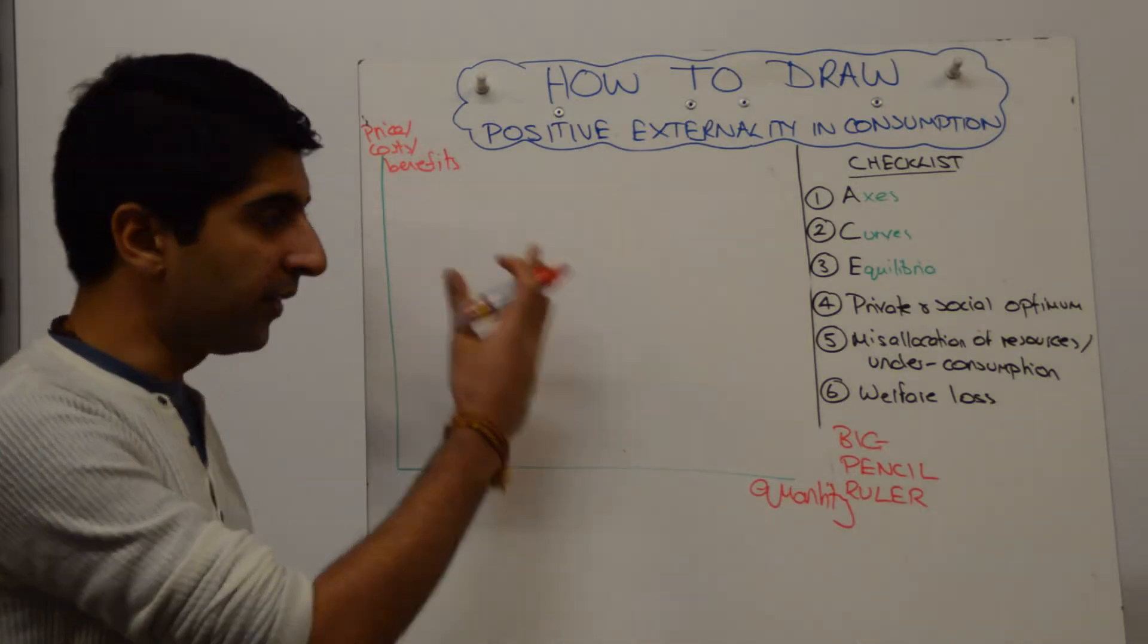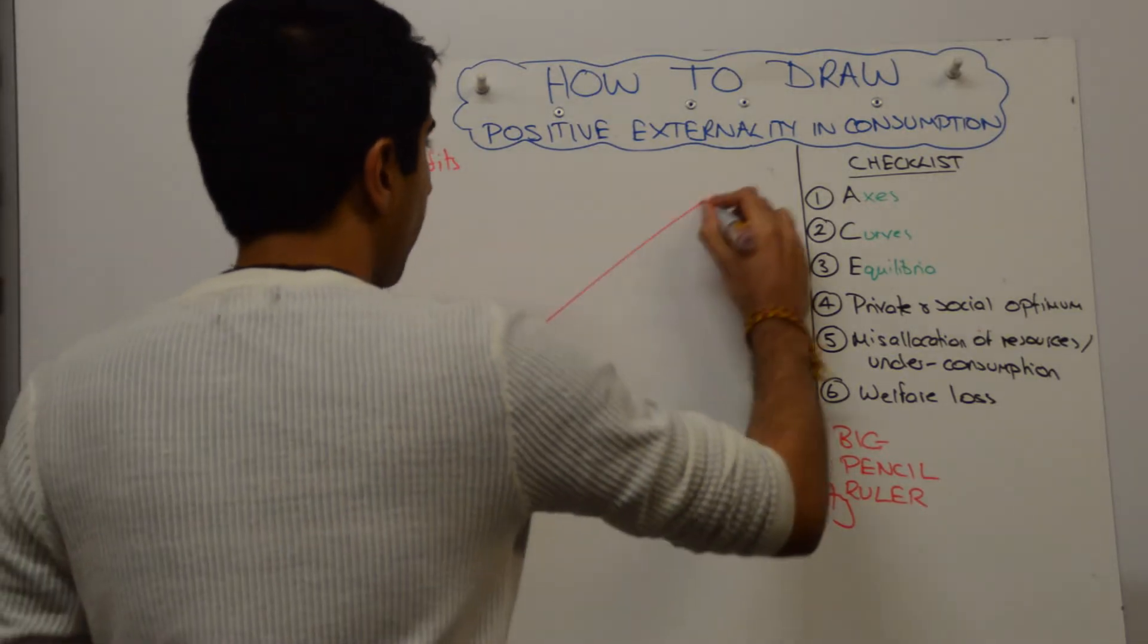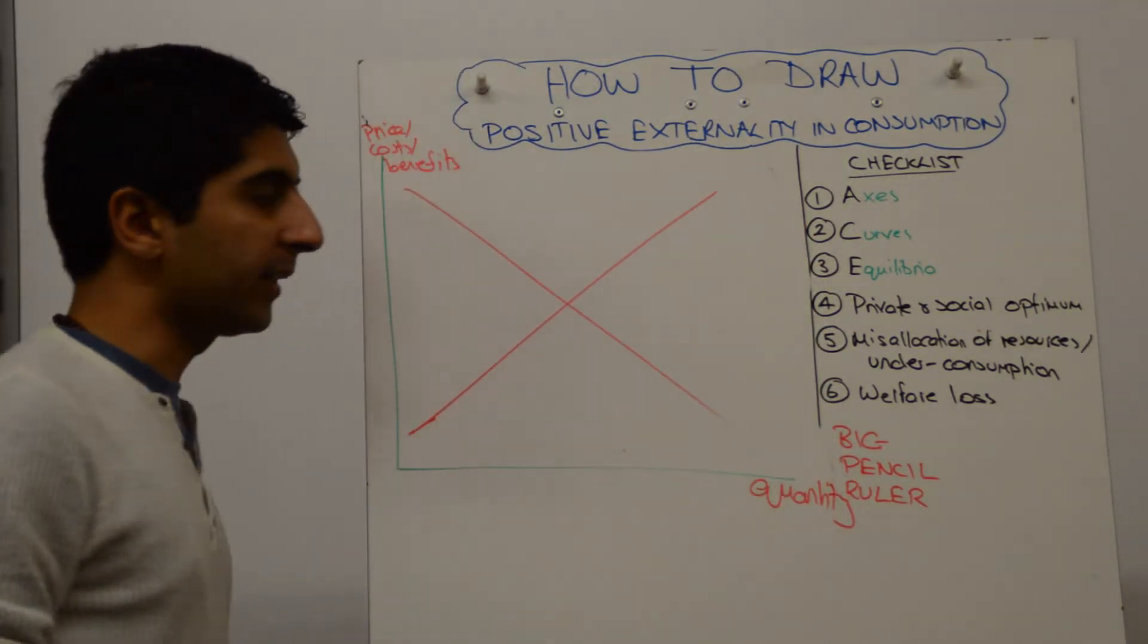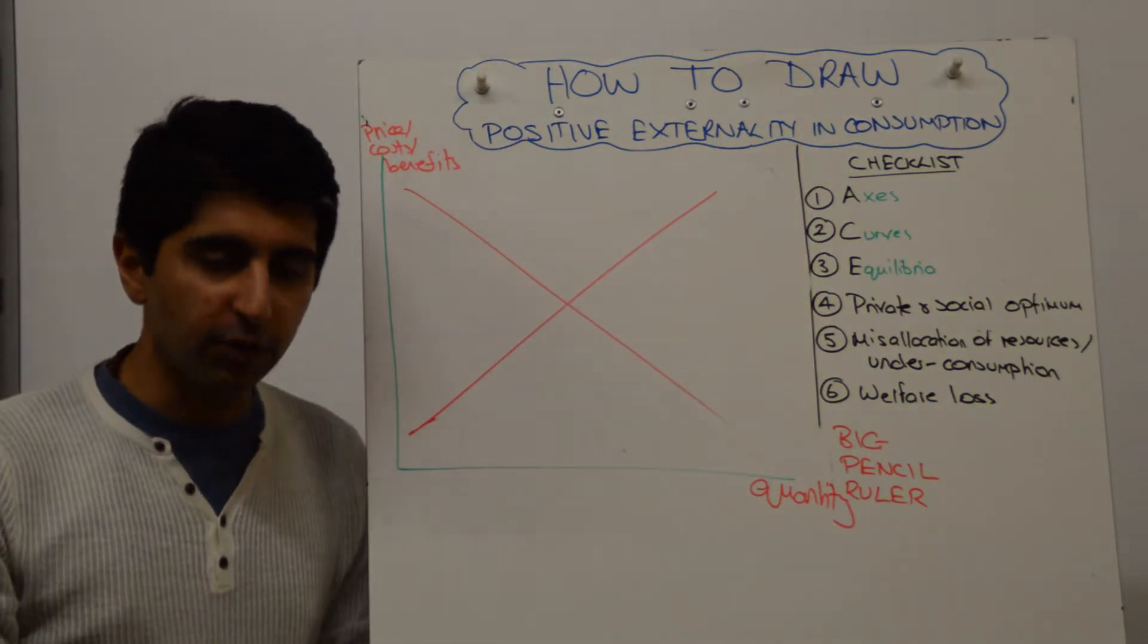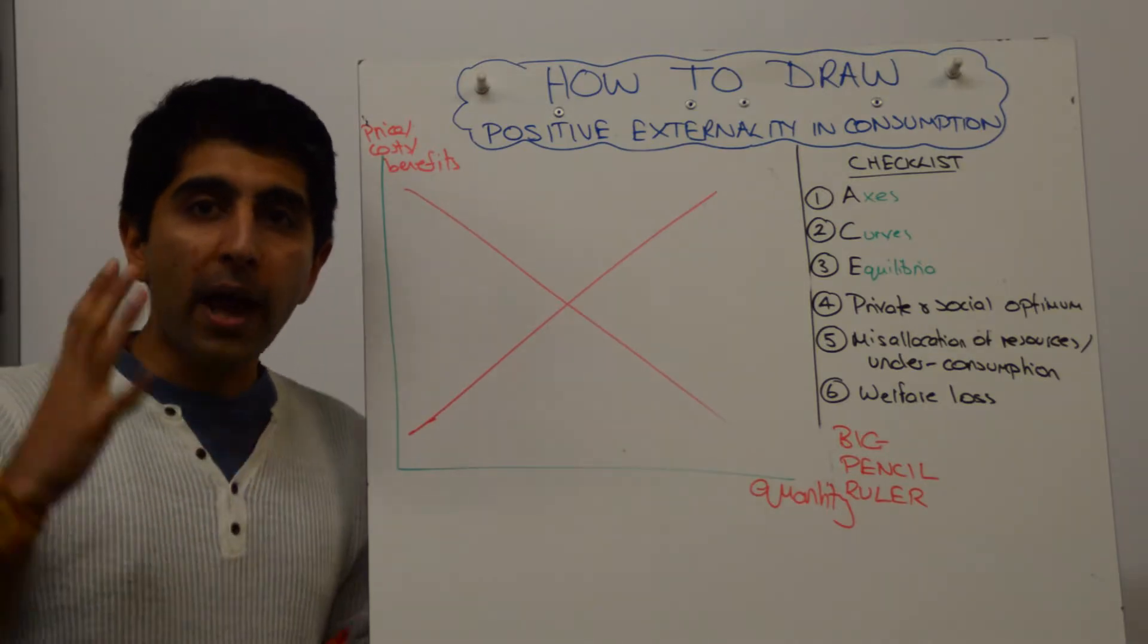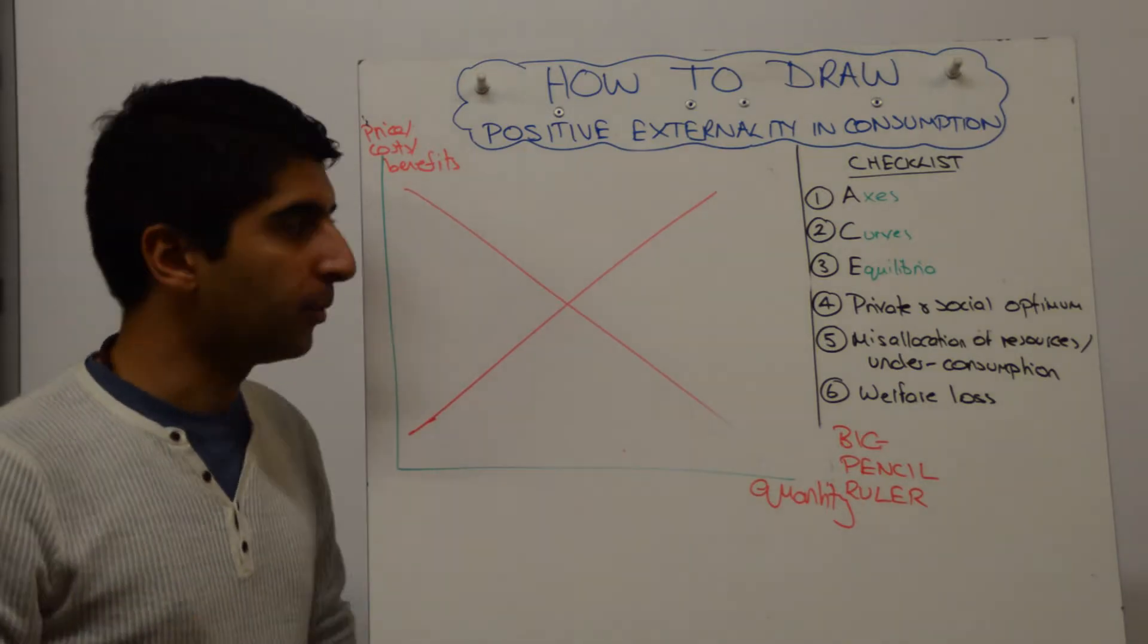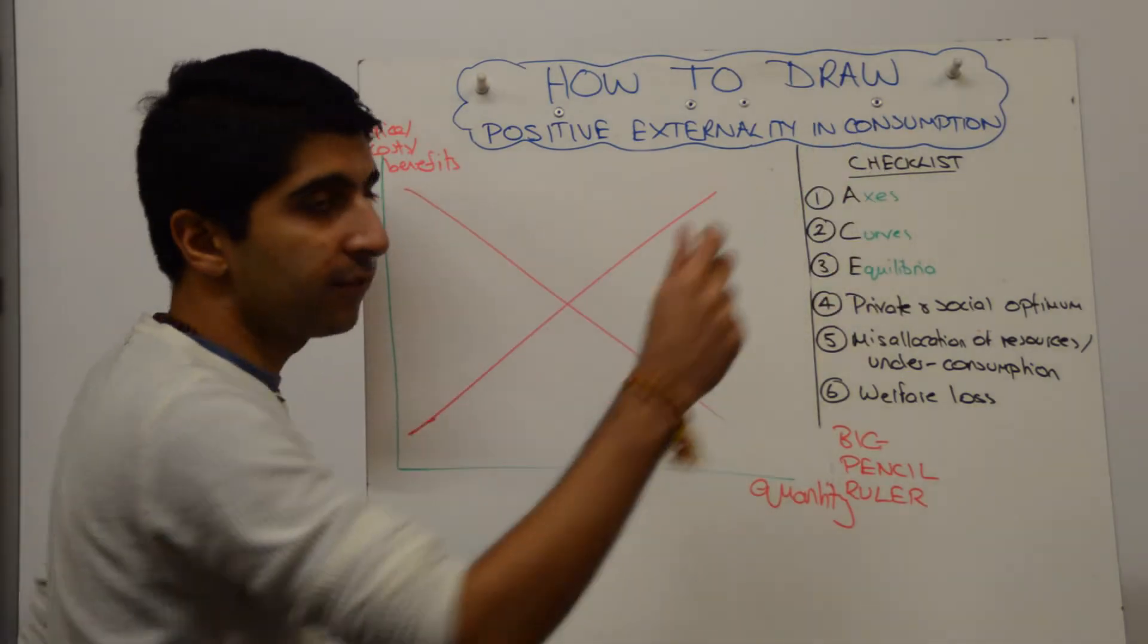We start with our basic equilibrium like that. We don't label the curves just yet. We go back to the title, positive externality in consumption gives us lots of clues.